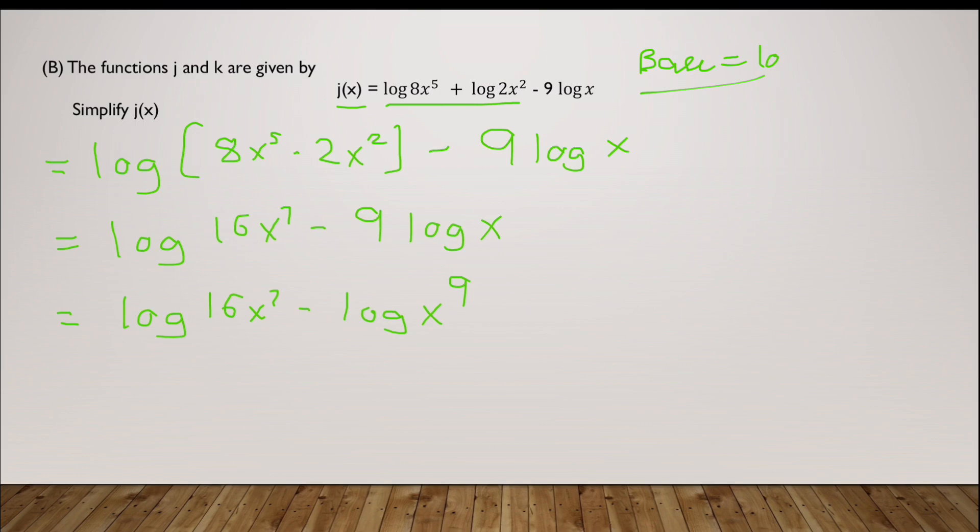And now according to the division rule I can actually rewrite this as log of 16 times x to the power 7 upon x to the power 9. And when we simplify this further I have log 16 over x square. And that is it. That is your final answer. You have rewritten the logarithm as a single base 10 which is 16 over x square. That was quite simple. Let's move ahead.